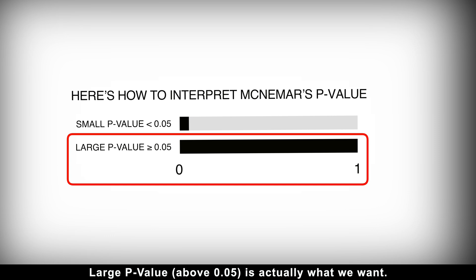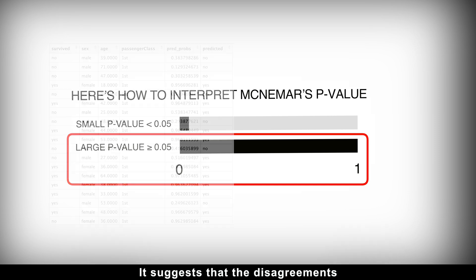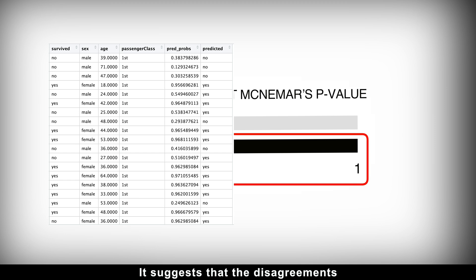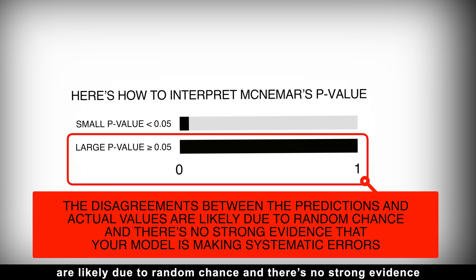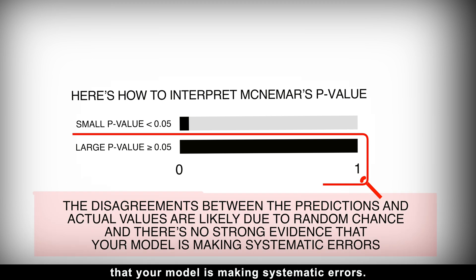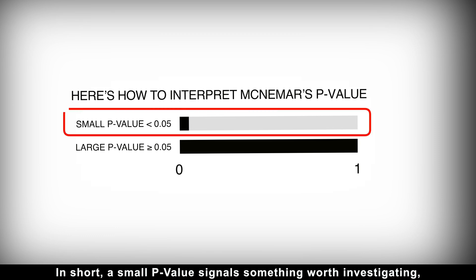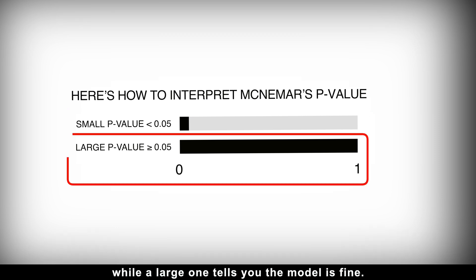Large p-value above 0.05 is actually what we want. It suggests that the disagreements between the predictions and actual values are likely due to random chance and there is no strong evidence that your model is making systematic errors. In short, a small p-value signals something worth investigating, while a large one tells you the model is fine.